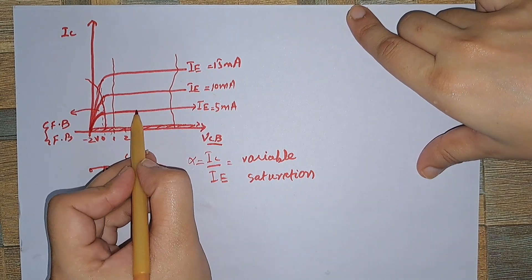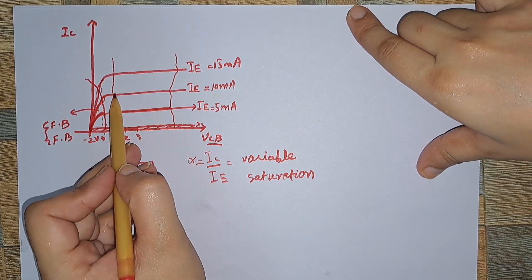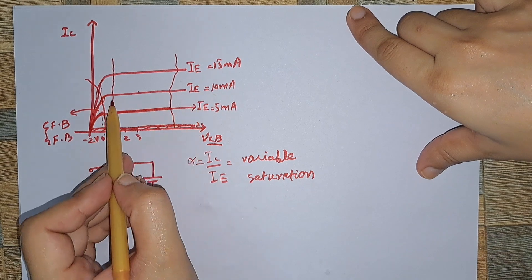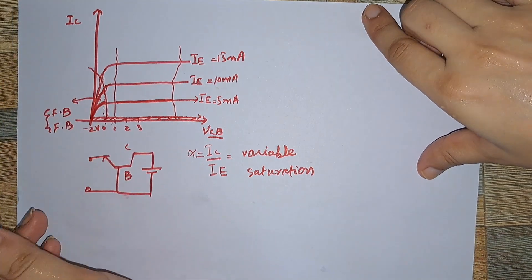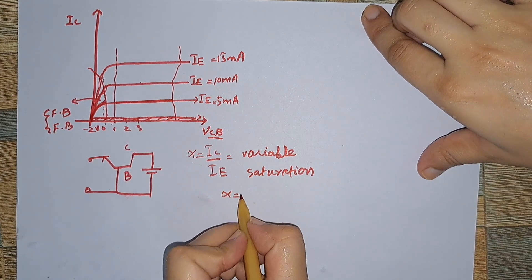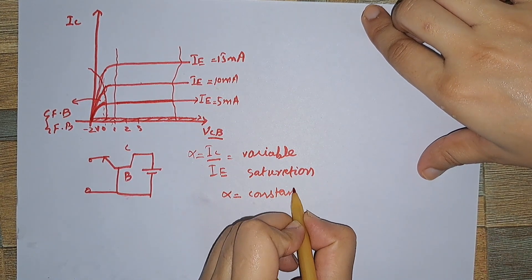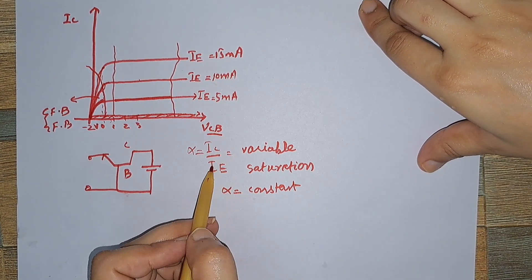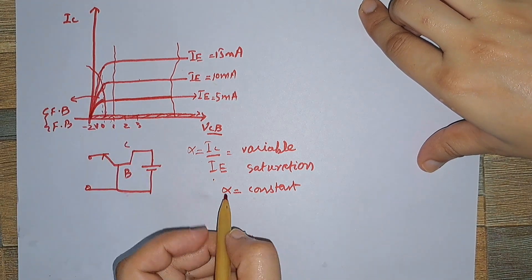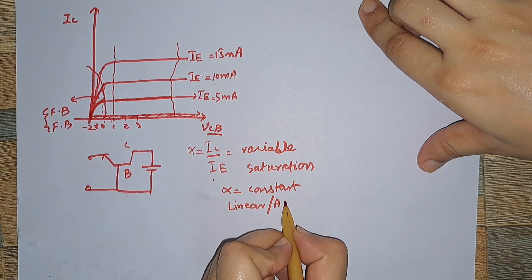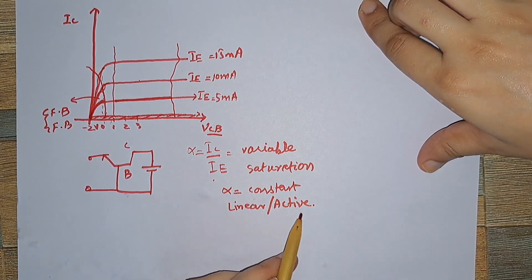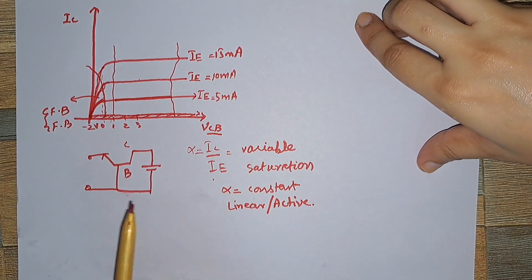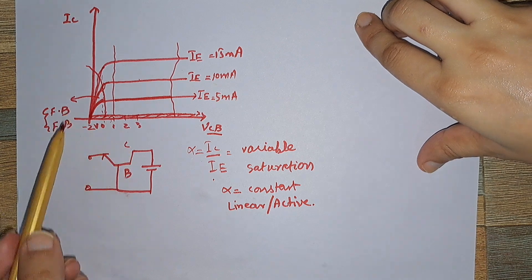The third and very important region is where the collector current curves level off. When the collector current levels off, the collector current is approximately equal to the emitter current, so alpha is essentially approximately constant, since it is the ratio of IC and IE which are approximately equal. This region is known as the linear or active region of the transistor, and in this particular region we design amplifiers using the transistor.